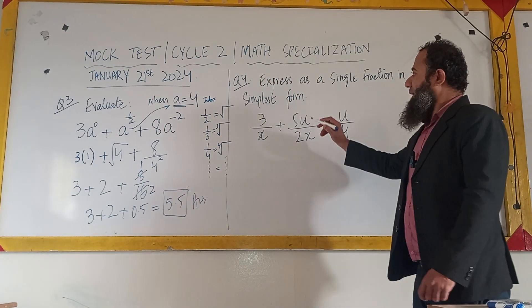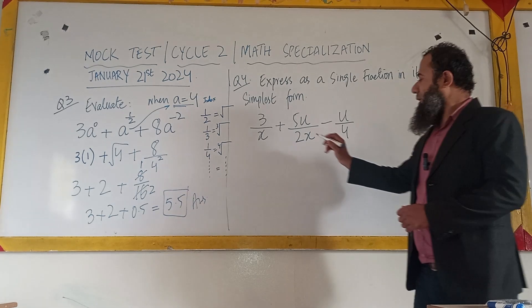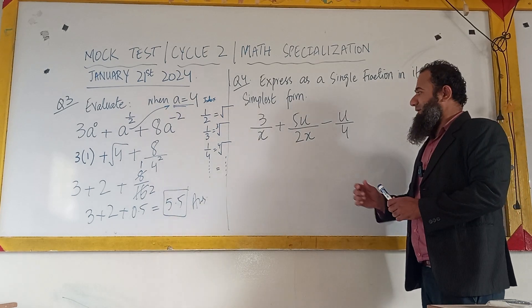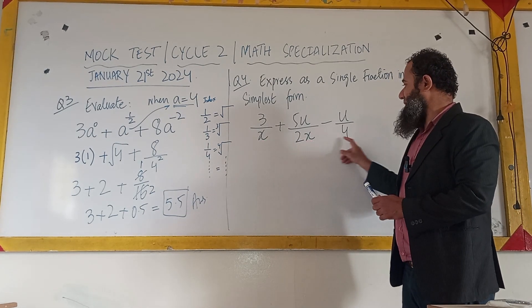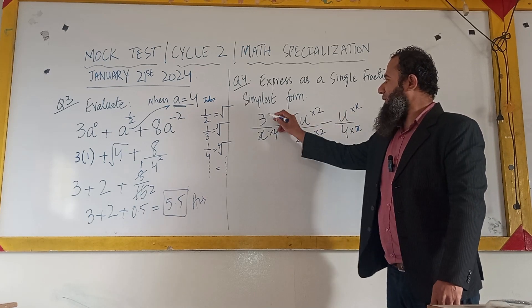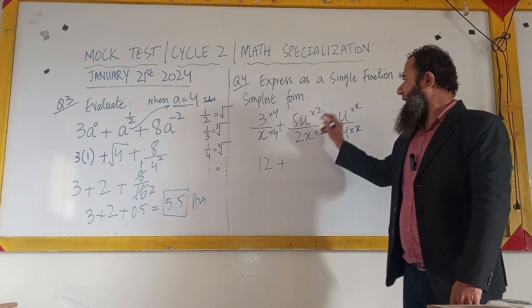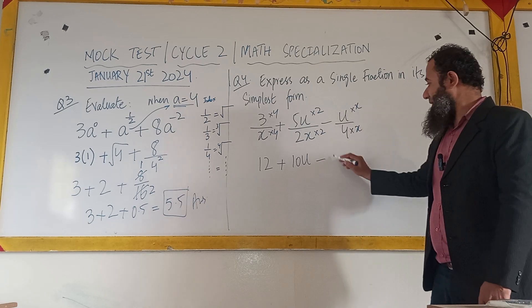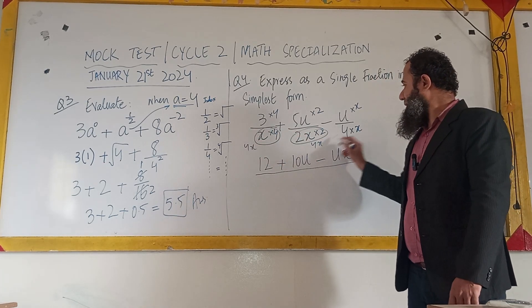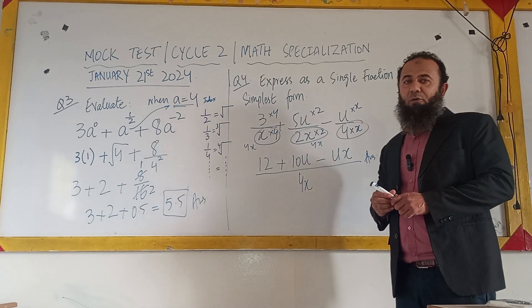In question number 4 we need to express the given expression as a single fraction in its simplest form. We change the denominators to a single common denominator. We have x, 2x, and 4, so we multiply each denominator appropriately. This gives: numerator 3 times 4 equals 12, minus 5 times 2 equals 10u, minus ux, all over the common denominator 4x as a single fraction.